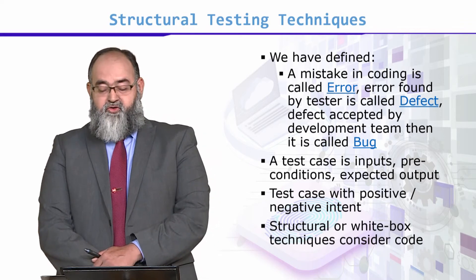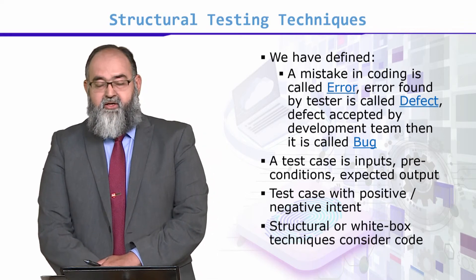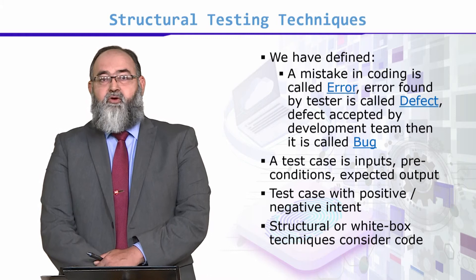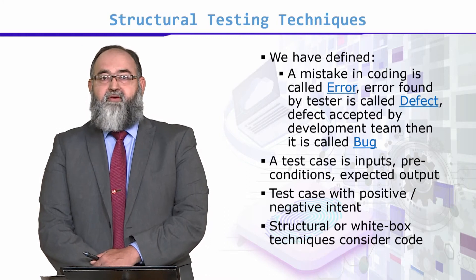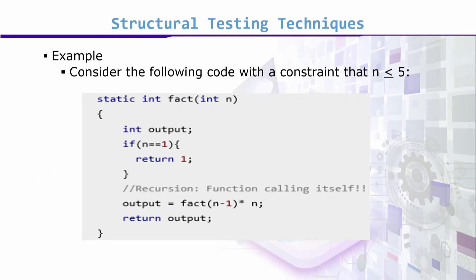While doing structural or white box testing, we consider code — we have access to the code. For example, consider the following code. This is a very simple 4-line code, which is the factorial code.